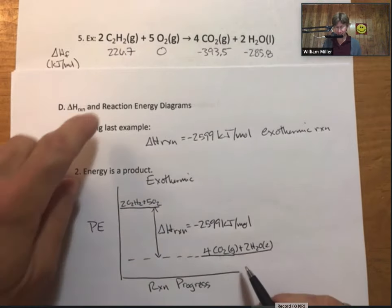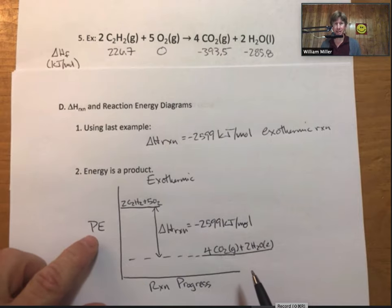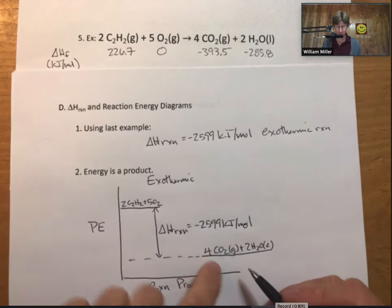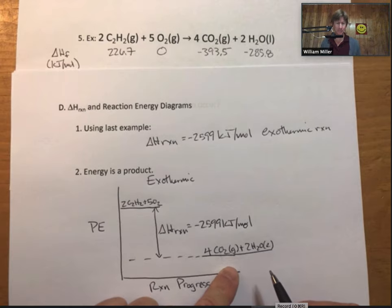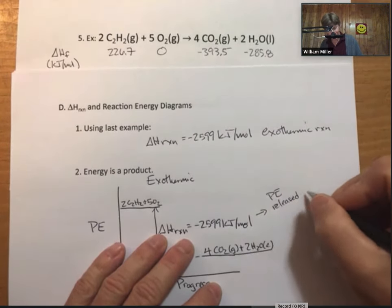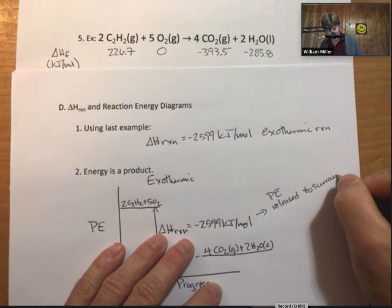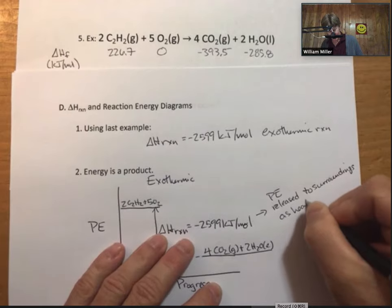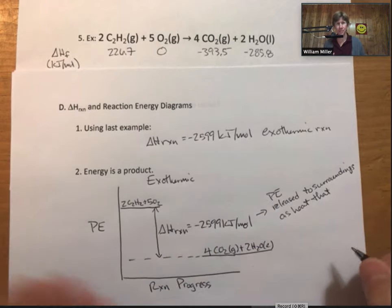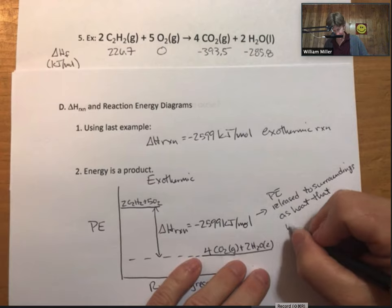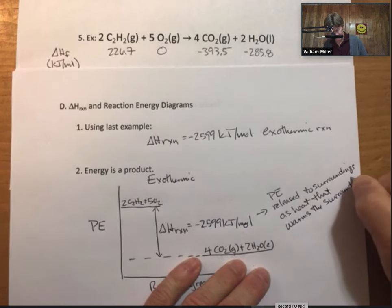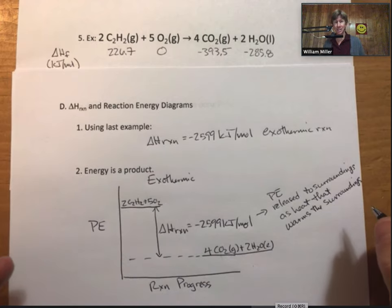What this picture does, it's a reaction energy diagram. It nicely illustrates, at least to me, that the potential energy of the reactants in an exothermic reaction is higher than the potential energy of the products. This energy is released to the surroundings. So, potential energy released to surroundings. As heat, heat that warms the surroundings. Raises their temperature and increases their kinetic energy.